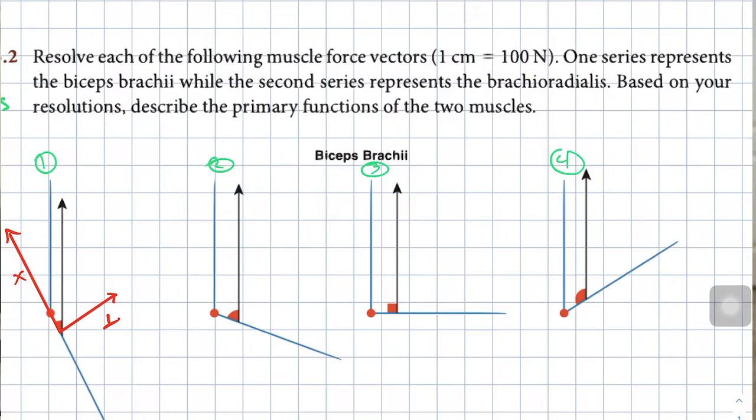The question says: resolve each of the following muscle force vectors. One series represents the biceps brachii while the second represents the brachioradialis. Based on your resolutions, describe the primary functions of the two muscles.